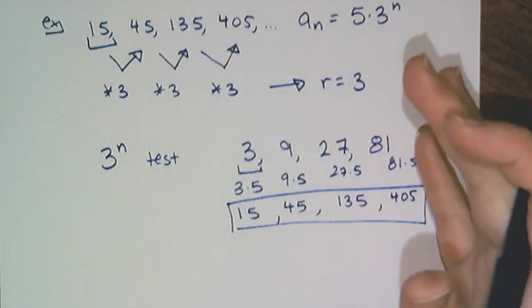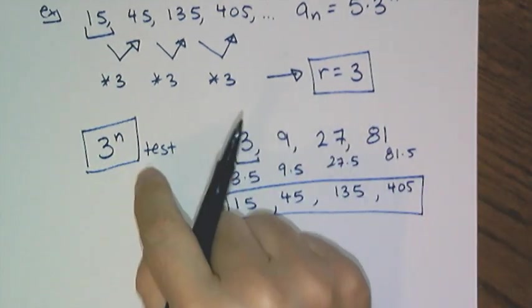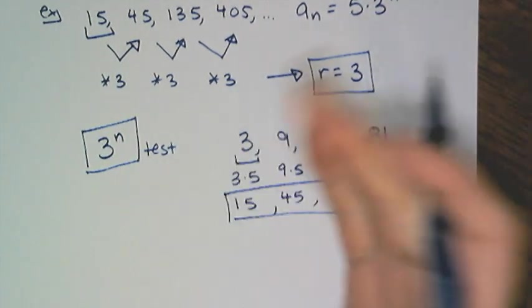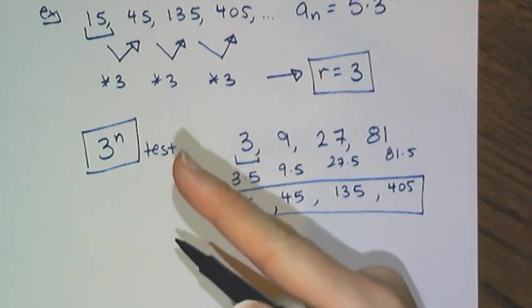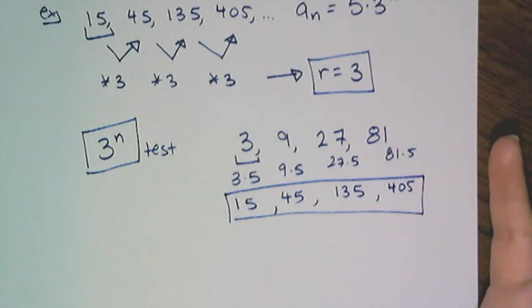So the technique is very simple. You're going to take the common ratio, raise it to the nth power, see what it gives you, figure out what's wrong, and fix it. So what was wrong in this case was that it was 5 times too small. So I just had to multiply by 5.